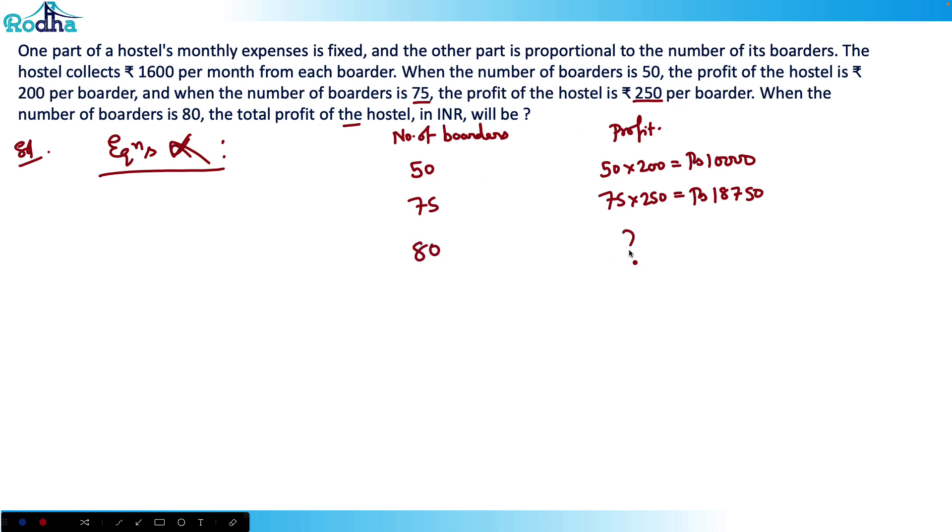When the number of boarders increases from 50 to 75, that's 25 increase. When the number of boarders increase by 25, the profit increases by 8750. That's the difference here.